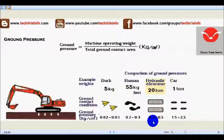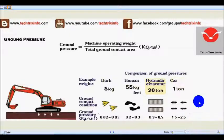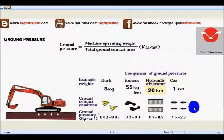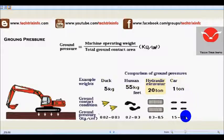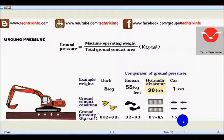For a car, we consider the contact area of four tyres with the ground. That contact area is very small compared to its weight of about one tonne, so the ground pressure is much higher than that of an excavator — around 1.5 to 2.5 kg per centimeter square — because the area of contact with the ground is very small relative to its weight.